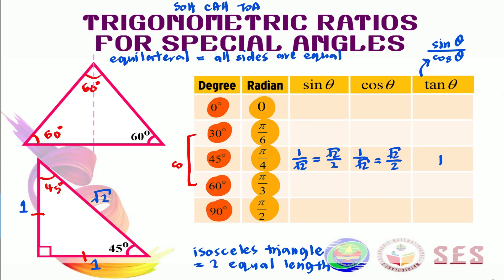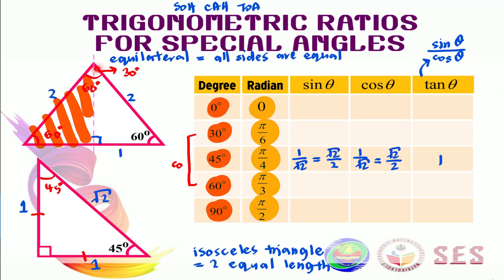Let's focus on just one of the triangles. The angle at the base becomes 90 degrees. Originally 60 degrees, the top angle is now halved to 30 degrees. For easier calculation, let each side of the equilateral triangle have length 2, so this side is 2, this side is 2, and this side is 2. Therefore the bisected base becomes 1. By Pythagoras' theorem, the remaining side has a value of square root of 3.